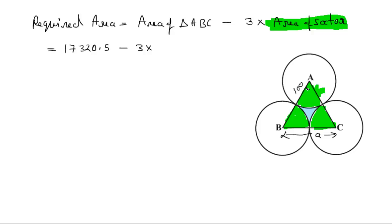Can you tell how much angle will be here? 60, exactly. So the formula is theta upon 360 into pi r². The angle is 60 degrees, and r equals 100. So it's 60 upon 360 into pi times 100².